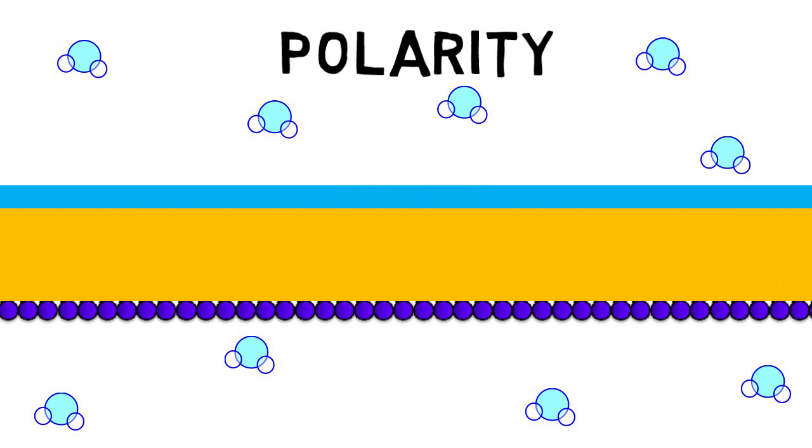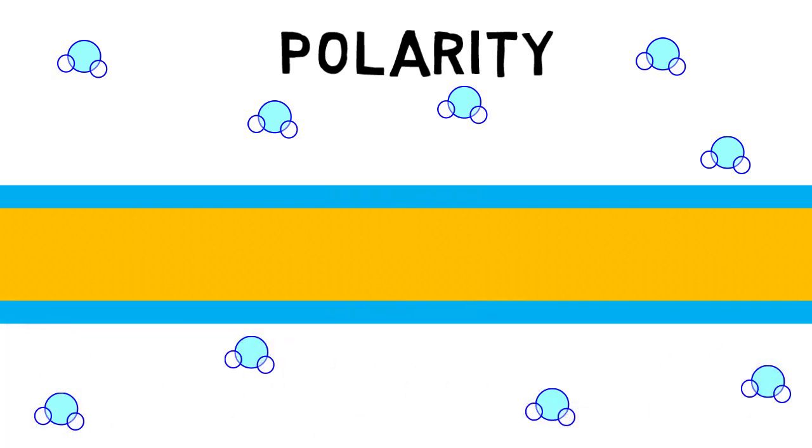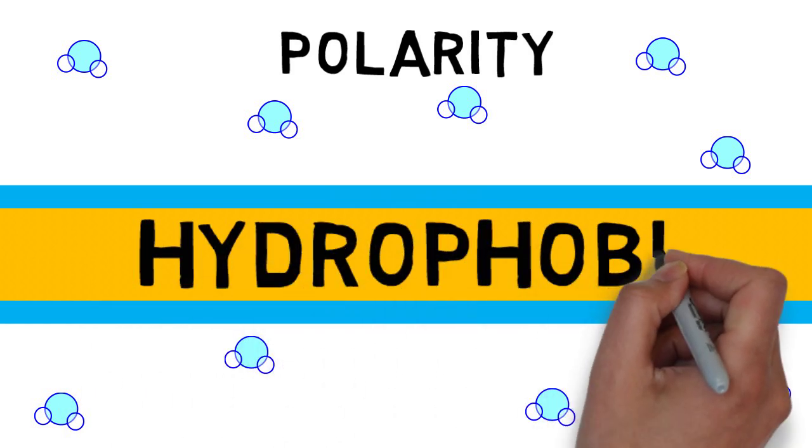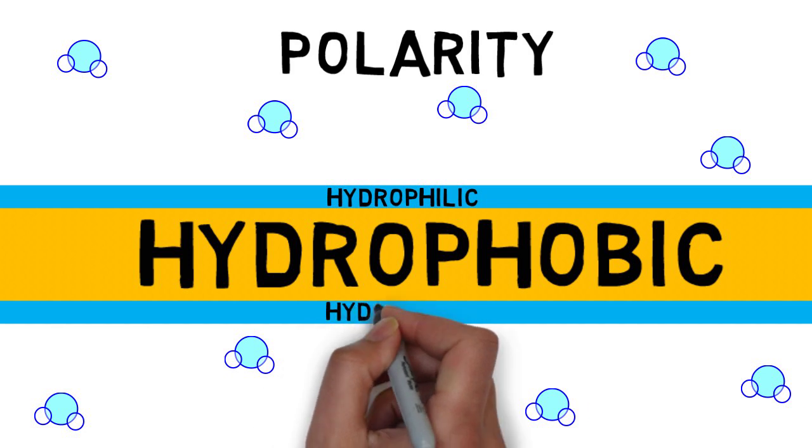In other words, the core region formed by the nonpolar tails, which form the bulk of the cell membrane, would be hydrophobic. Whereas the top and bottom side formed by the polar heads would be hydrophilic.